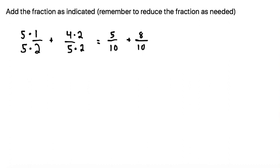So now we've made two fractions that have common denominators. Once we find the fractions that have common denominators, we add their numerators. So 5 plus 8 is 13, and we keep the denominator of 10.